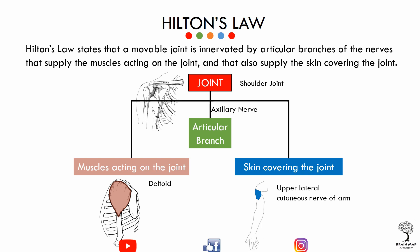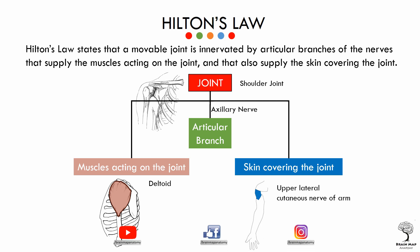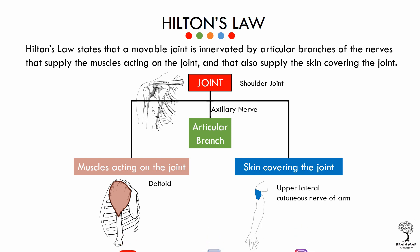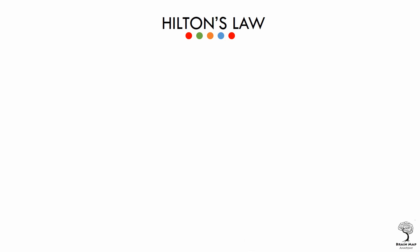Hilton's Law can be applied to the elbow joint and knee joint also. Interestingly, the observation of John Hilton often holds true in reverse as well — that is to say, a nerve that supplies skin or a muscle will often supply the applicable joint.